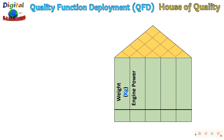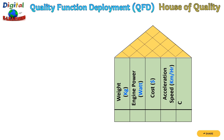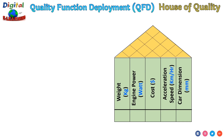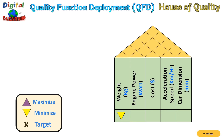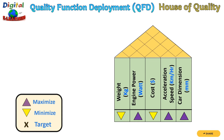The design parameters we will list are: weight in kg, engine power in watts, cost in dollars, acceleration speed, and car dimensions in mm. We also define whether higher is better, lower is better, or we want to hit a target. For weight, we want to minimize. For power, we want to maximize. For cost, we want to minimize. For acceleration, we want to maximize because we want a fast car. For car dimensions, we want to maximize.